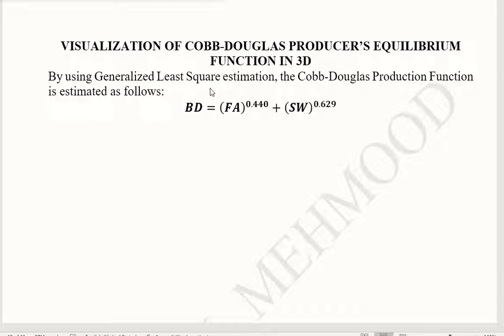Now we focus on this certain production function, that is the Cobb-Douglas production function. And we are going to go towards its producer's equilibrium in 3D. Right now in the first stage, we remember from our previous experience that we estimated the Cobb-Douglas production function by using the generalized least-square estimation method, because that was statistically speaking suitable in the given situation.